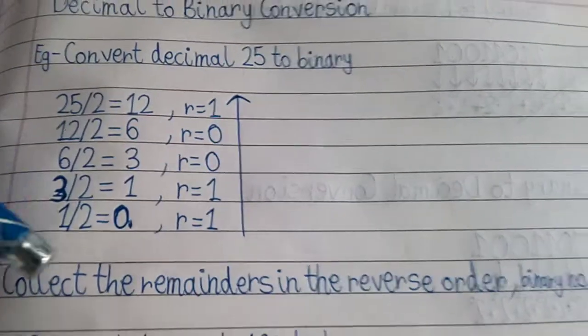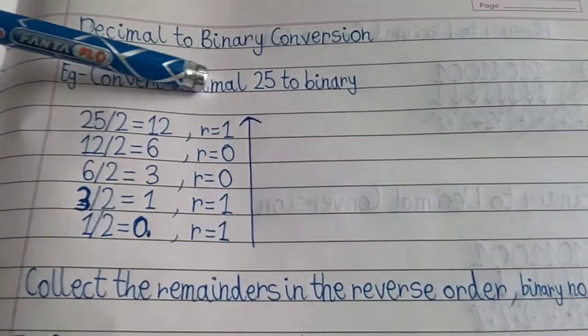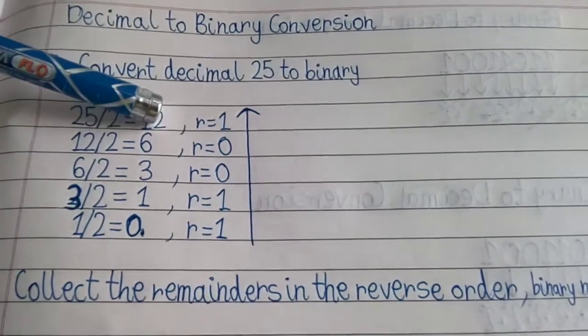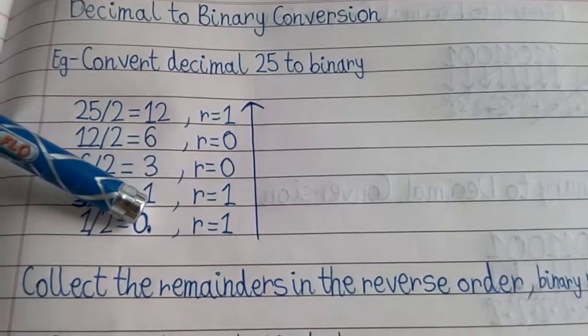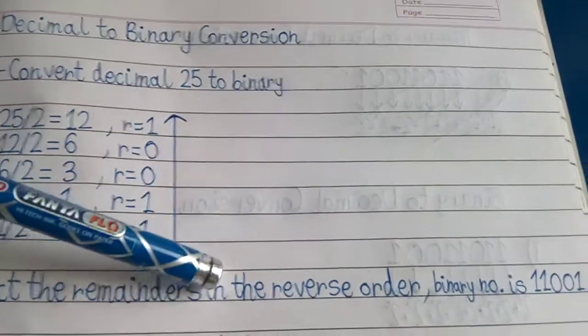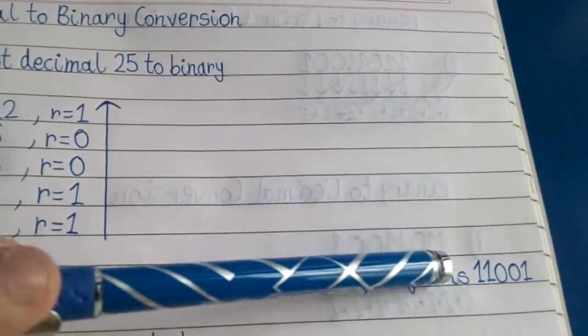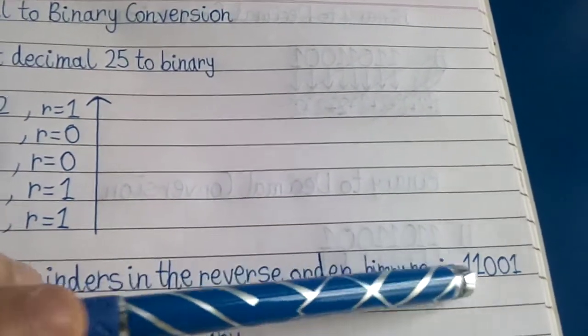Like I had taken the example to convert decimal 25 to binary. So first I divided by 2 and I repeated that step till we got the quotient as 0. We collected the remainders in the reverse order and we got the binary number as 11001.